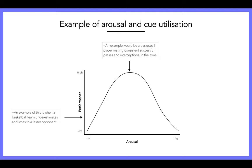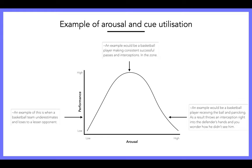Optimal arousal is also known as being in the zone, which we'll discuss as we move through the syllabus. Someone who's playing really well is picking up on all the task-relevant cues and acting accordingly. At high arousal, the example is a basketball player receiving the ball and panicking. As a result, he throws an interception right into the defender's hands and everyone's thinking, how did he not see them? He hasn't picked up on the task-relevant cues because he's so narrowly focused — he's over-aroused, which is not good for performance.